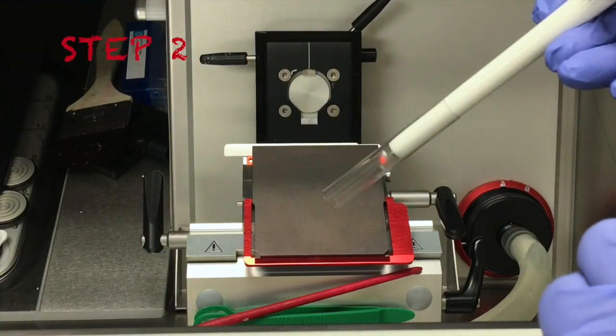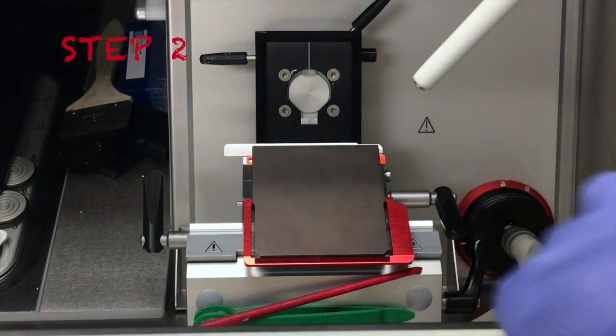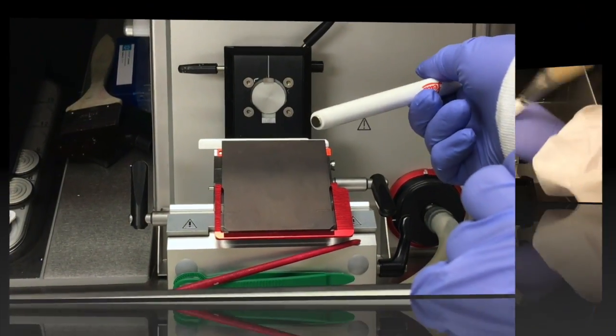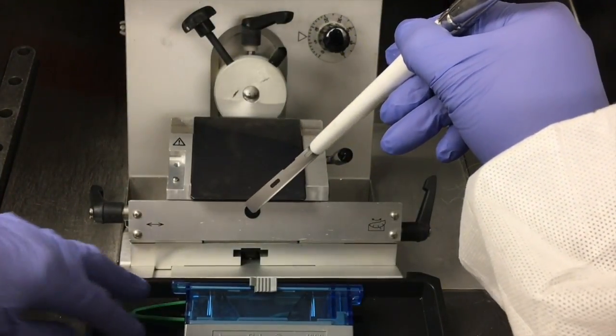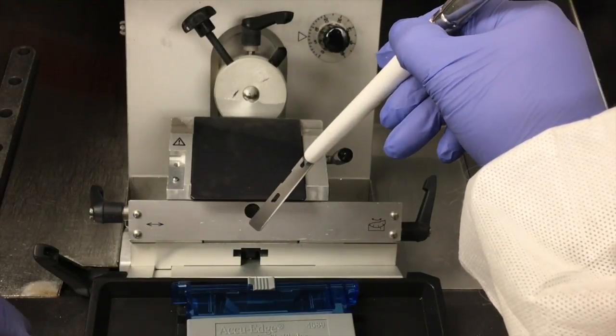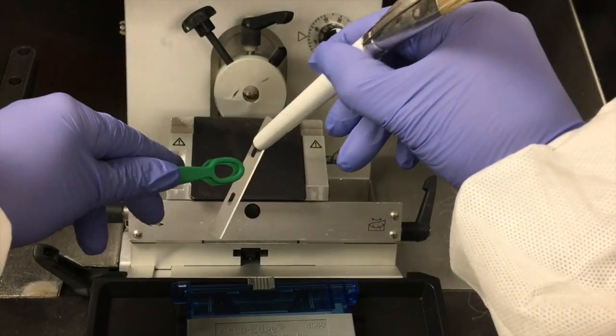Step 2. Now remove plastic magnet guard from the end of the Leica brush to expose the magnet. With magnet remove blade from behind the blade clamping plate. Use the green plastic forceps to separate blade from magnet.